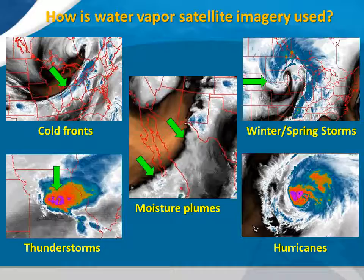In the bottom right image, we can see how water vapor imagery is useful in helping meteorologists determine where the highest amounts of mid and upper level moisture in a hurricane are located.